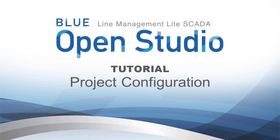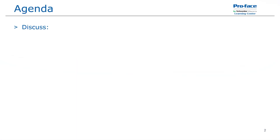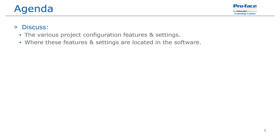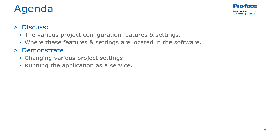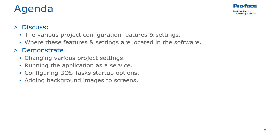Hello and welcome to the Blue OpenStudio tutorial video series. The topic of this video will be project configuration. We will be discussing the various project configuration features and settings, where these features and settings are located in the software, and we will demonstrate changing the various project settings, running the application as a service, configuring the BOS tasks startup options, adding background images to screens, and changing the screen layout.